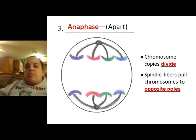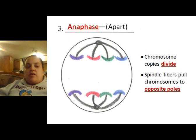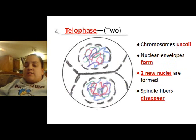Anaphase — on one side it says anaphase. On the other side: chromosomes copies divide, spindle fibers pull chromosomes to the opposite poles. Anaphase: on one side, on the other side — chromosome copies divide, spindle fibers pull chromosomes to opposite poles.